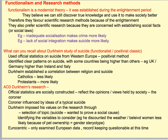I want to talk briefly about functionalism and their approach to research methods — if you've looked at the Durkheim study of suicide, some of this will be familiar. Functionalism is a truly modernist theory, established during the Enlightenment period — the 18th and 19th century — and they believe we can still discover true knowledge and use it to make society better. Functionalists favour scientific research methods because that was the prevailing school of thought during the Enlightenment period. They wanted to establish themselves as a respected science, so they used methodologies applied to studying the natural world.